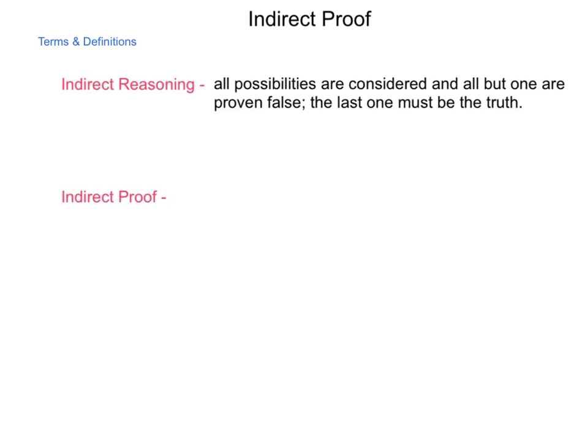I believe it was Arthur Conan Doyle through the character of Sherlock Holmes who said, when you eliminate the impossible, whatever remains, however unlikely, must be the truth. And that's a process of using indirect reasoning.